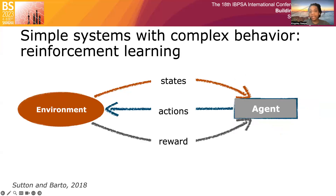In reinforcement learning, an agent learns to perform a task by acting in an environment given some observed states. It then receives a reward that quantifies the quality of the action taken. By exploring the environment, the agent learns an optimal set and sequence of state-action pairs that maximizes its cumulative reward. However, a major challenge for the adoption of reinforcement learning in buildings is the ability to benchmark control algorithms to accelerate reliable deployments on live systems.